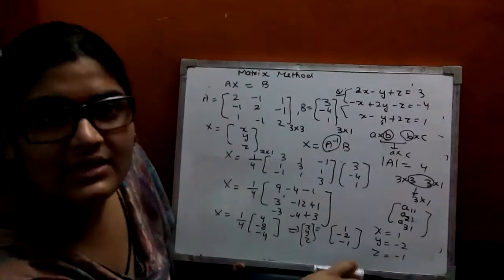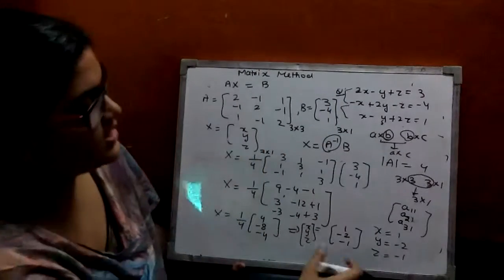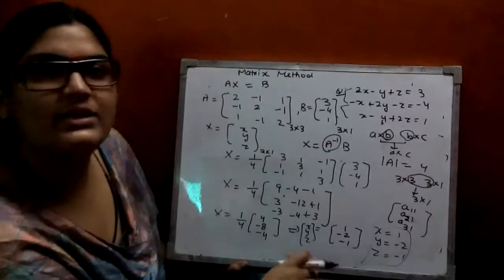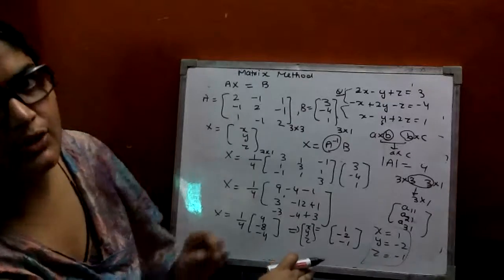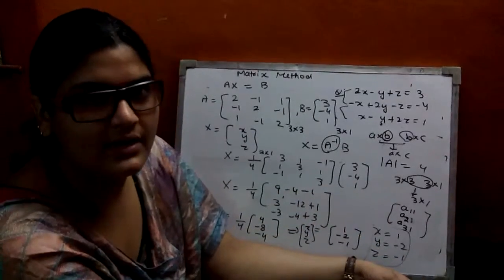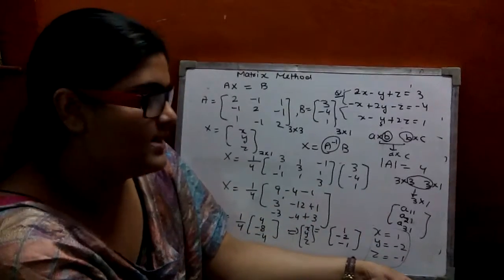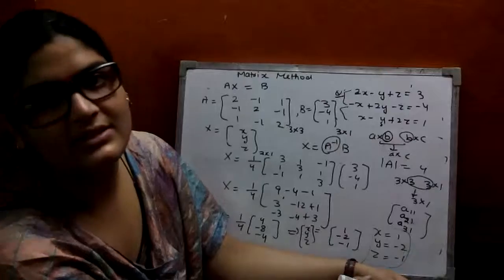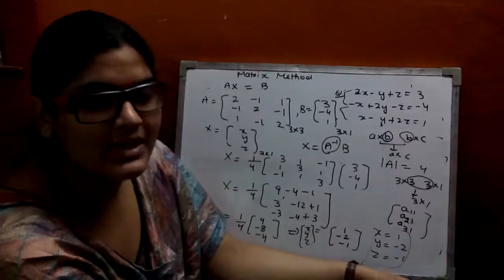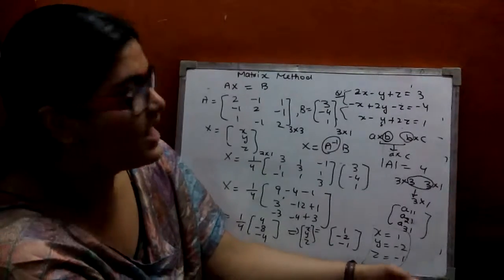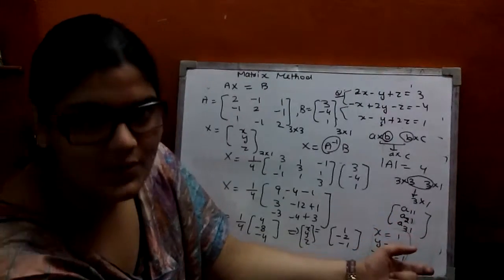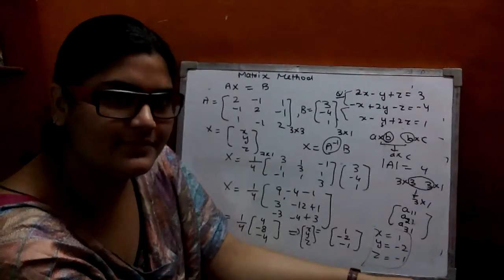X is nothing but the matrix of 3 by 1 order with X, Y, Z. On comparing at each position, you get X as 1, Y as minus 2, and Z as minus 1. If you solve these equations, you will definitely get these values. I hope you understand how to solve equations with matrix method. Thank you, keep learning, and if you have any doubt, ask us.